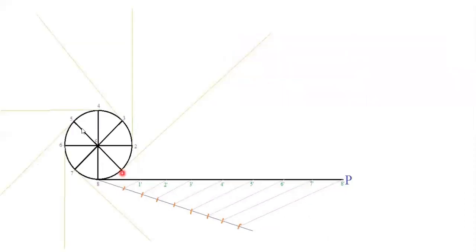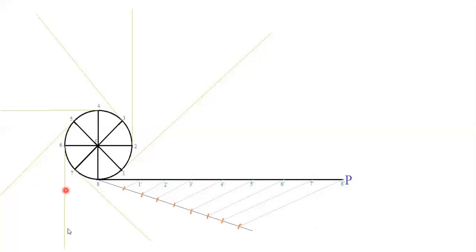At each division point on the circle, draw a perpendicular line outward: keep C-1 as your base, 1 as center, and draw a 90-degree line. Then C-2 as base, 2 as center; C-3 as base, 3 as center; C-4 as base, 4 as center; C-5, 6, and 7 similarly — each time drawing a 90-degree perpendicular line to some extent. For point 8, no perpendicular is needed as it lies on the circumference of the circle.